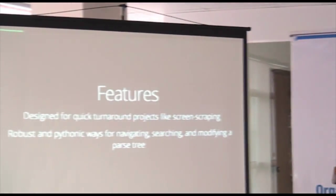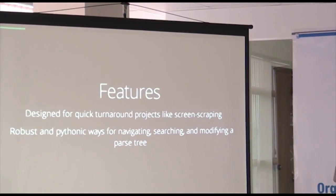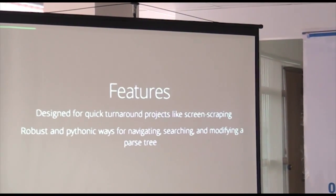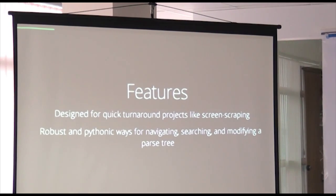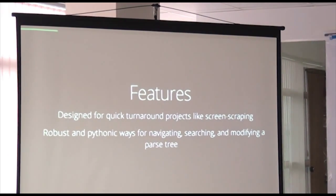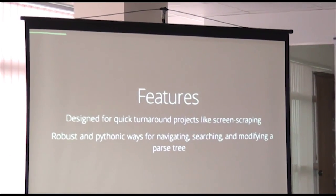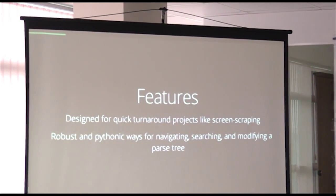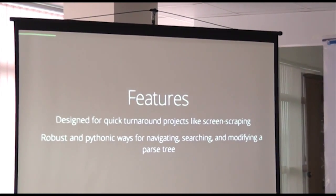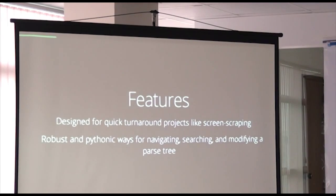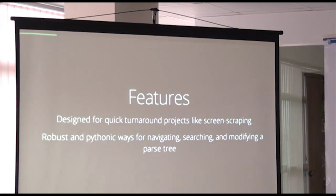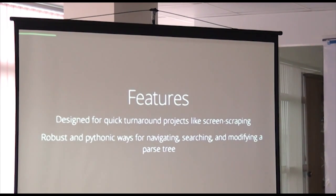This Beautiful Soup tool is a robust API. We have a next element, and another element, and another element — so it is robust.